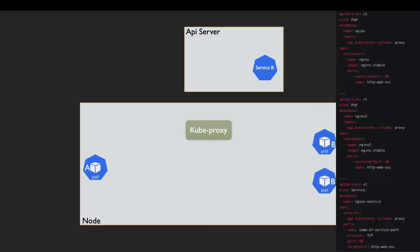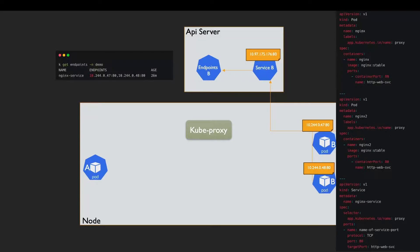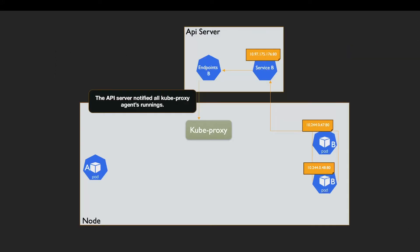After we apply this code, it's going to create two pods and a service. When a service is created, the API server assigns virtual IP addresses to it. For example, if we run 'kubectl get endpoints' we can see one endpoint that points to the two pods — we can see the IPs of the two pods. Then the API server notifies the kube-proxy agents running on each node.